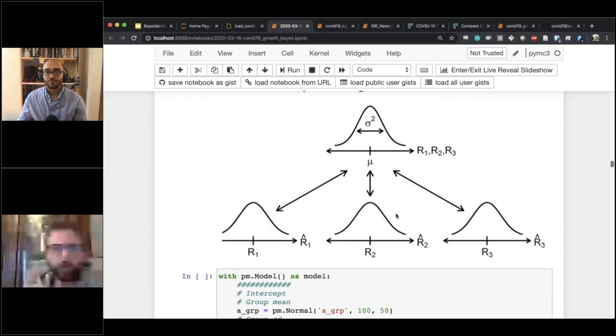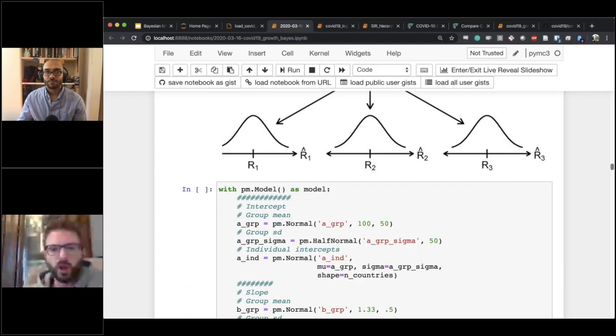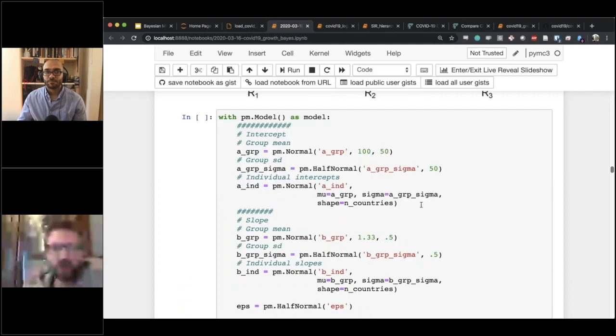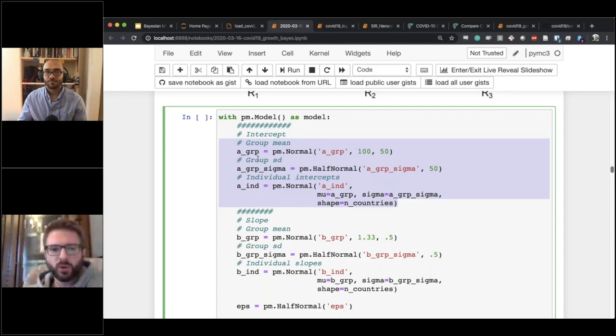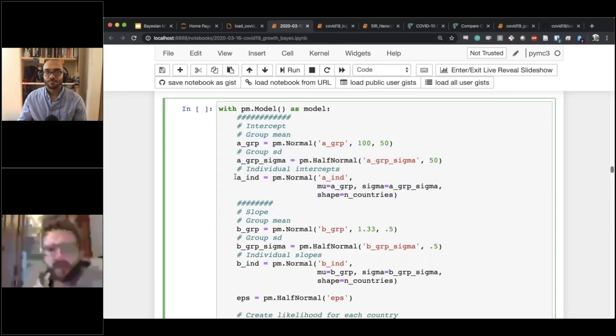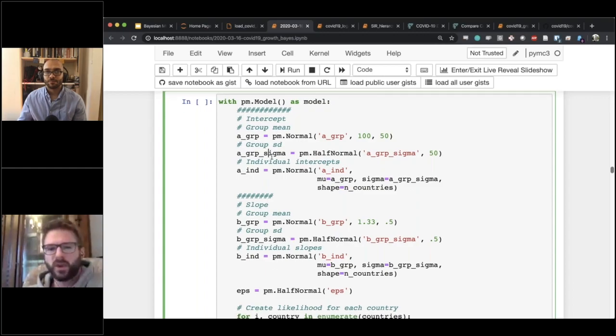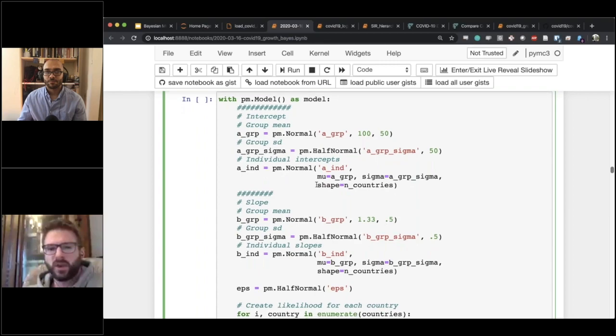And again, I'm not going to go into too much detail, but just to show that the model now gets more complex, but not by much. So for every parameter that we had before - we still have our intercept, we still have our slope - but now each of those is three different probability distributions. We have our group mean, our group standard deviation, and then we have the individual intercepts for each country. So here we have the shape parameter for the number of countries, and it follows the group mean, rather than before we just set it to a particular value. So now this is also going to be estimated.